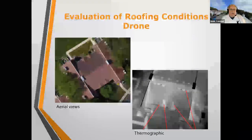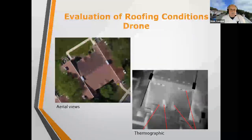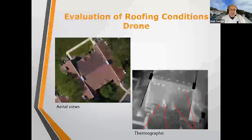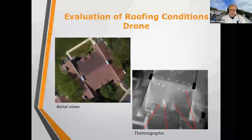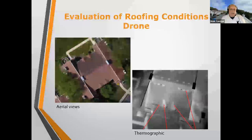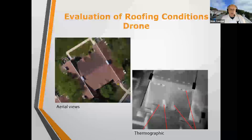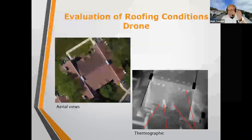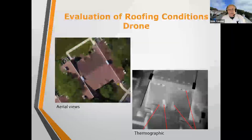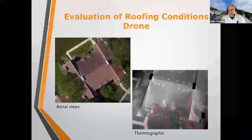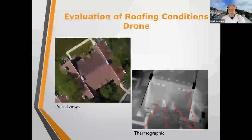Here's an example of drone photography. On the left is a straight-down view from the drone, and we can also use thermographic imagery to find where wet areas are occurring underneath the shingles, as seen on the right.